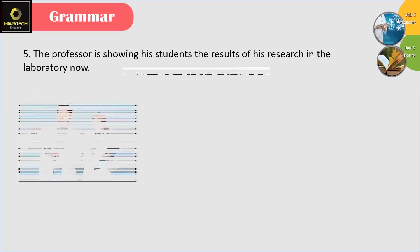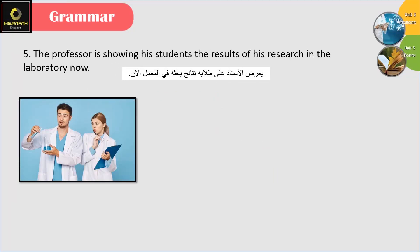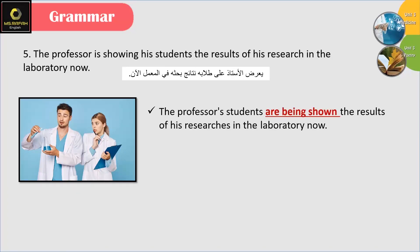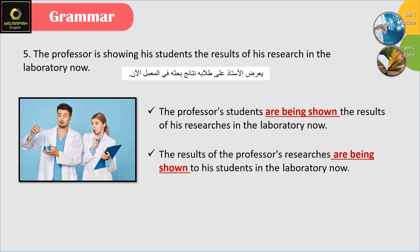Number 5: 'The professor is showing his students the results of his research in the laboratory now.' We can say: 'The professor's students are being shown the results of his research in the laboratory now.' Or we can say: 'The results of the professor's research are being shown to his students in the laboratory now.'